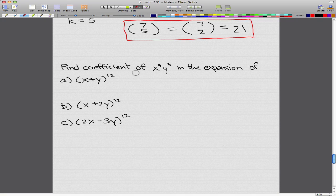Find the coefficient of x^9y^3 in the expansion of (x+y)^12, (x+2y)^12, and (2x-3y)^12.